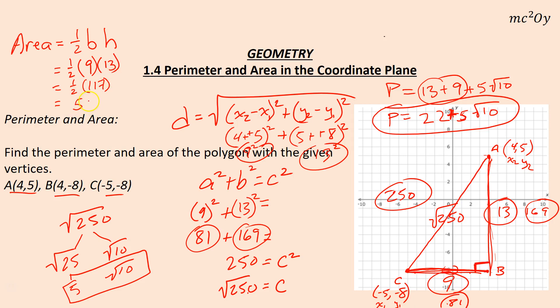Half of 100 is 50 and half of 17 is 8.5, so 58.5. That is my area and it would be reported in square units. Perimeter would be reported in linear units. That's all there is to area and perimeter in the coordinate plane.